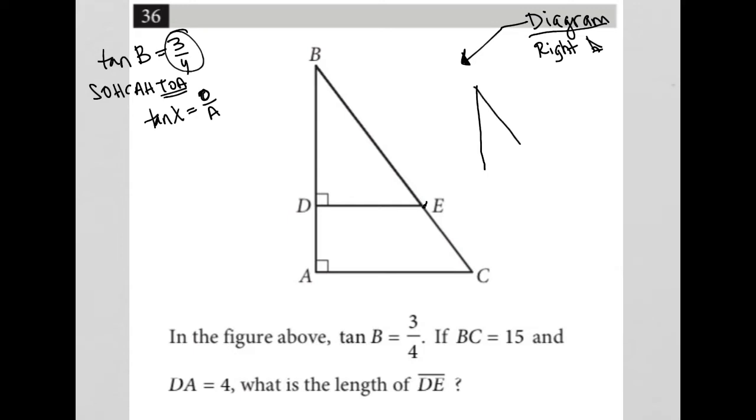So, here is BDE. And based upon tan B equaling three over four, I would say that this opposite to angle B is 3x, and this side that's adjacent to angle B is 4x.